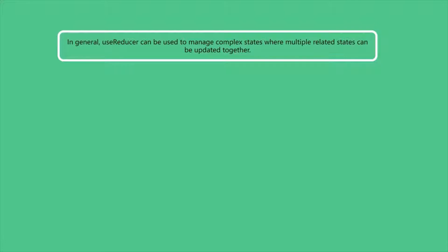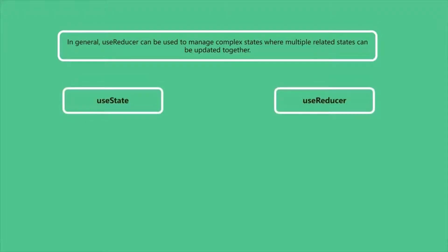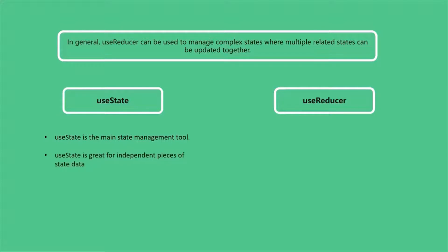To give you some ideas on when to use useState and when to use useReducer, let's take a look at some points. useState is your main state management tool. Typically, you start with useState and often it's all you need. useState is great for independent pieces of state and data. It's best for simple state management.